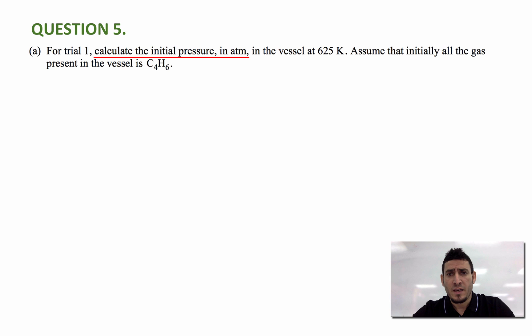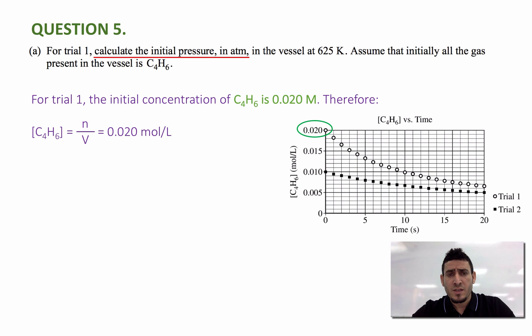Assume that initially all the gas present in the vessel is C4H6. Now for trial one, the initial concentration of C4H6 is 0.020 molar. I can take this one from the plot concentration versus time.